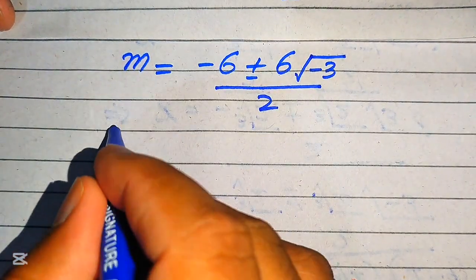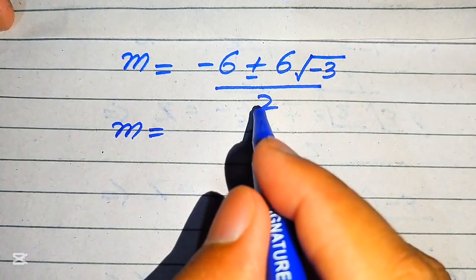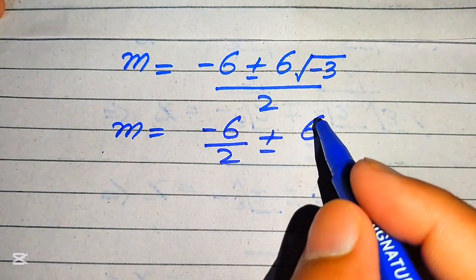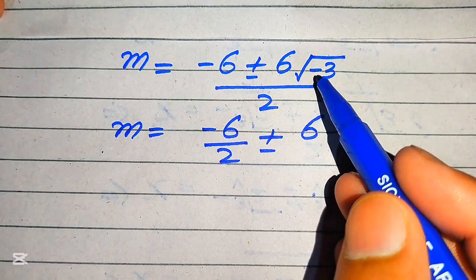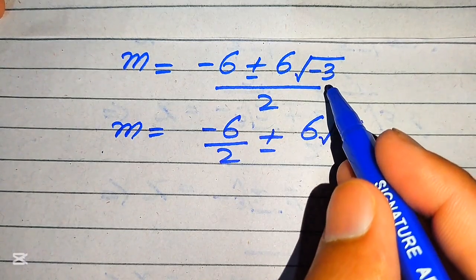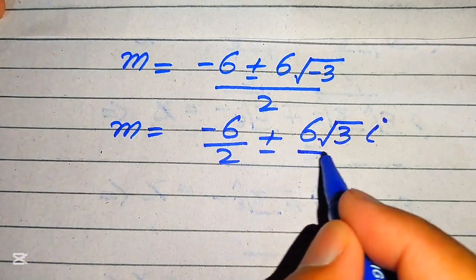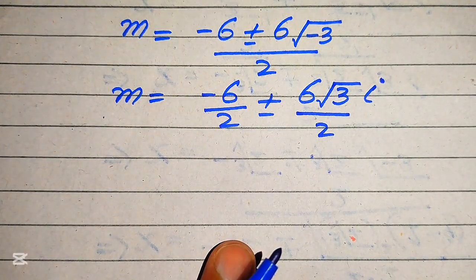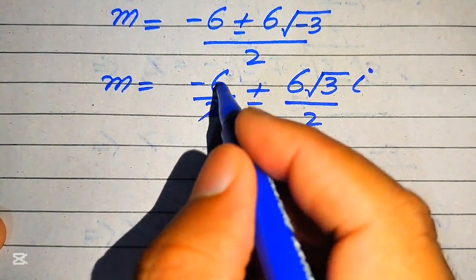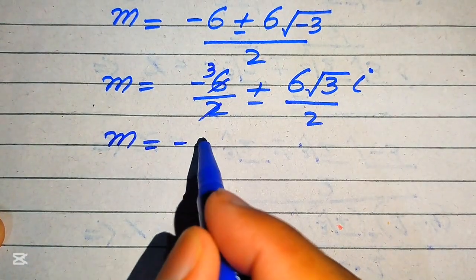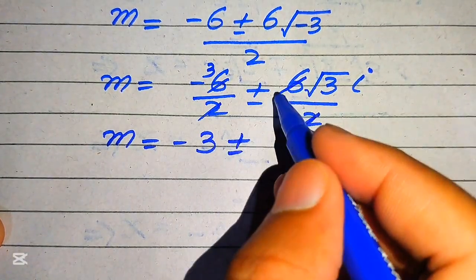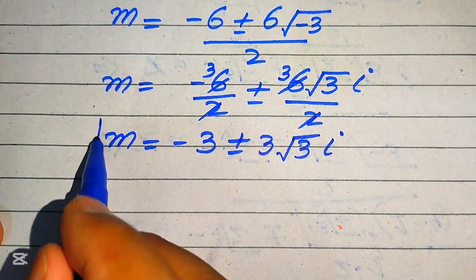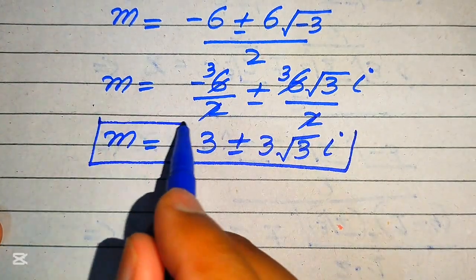We break the fraction and write the 2 separately under both values, giving minus 6 over 2 plus or minus 6 times the square root of 3 times iota, divided by 2. Since there is a negative sign inside the square root, it becomes iota. Cancelling common factors of 2, we get m equals minus 3 plus or minus 3 times the square root of 3 times iota. These are the other two complex roots of the given equation.